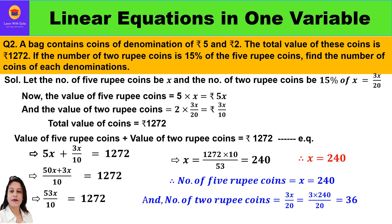Now let us take up one more question. This is an extra question which I have added to this video just for practice. A bag contains coins of denomination rupees 5 and rupees 2. The total value of these coins is 1272. If the number of 2-rupee coins is 15% of the 5-rupee coins, find the number of coins of each denomination.